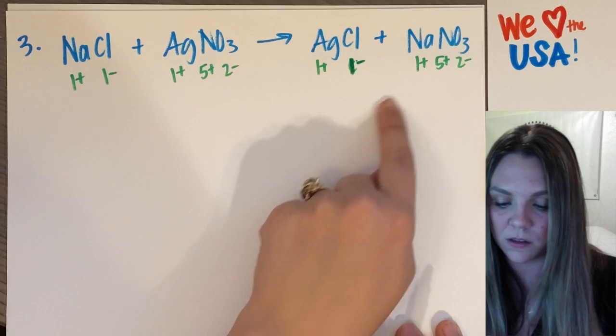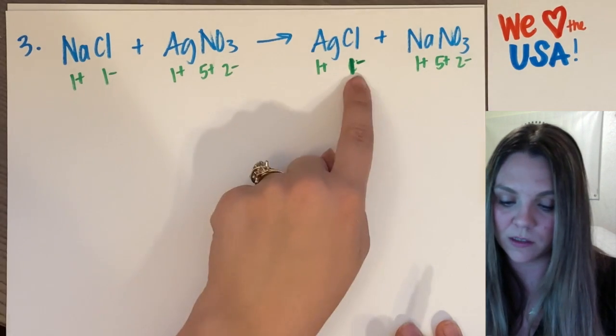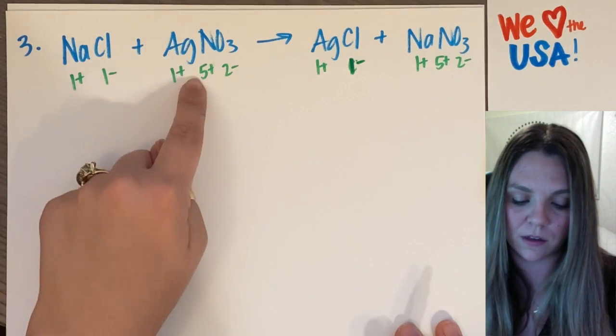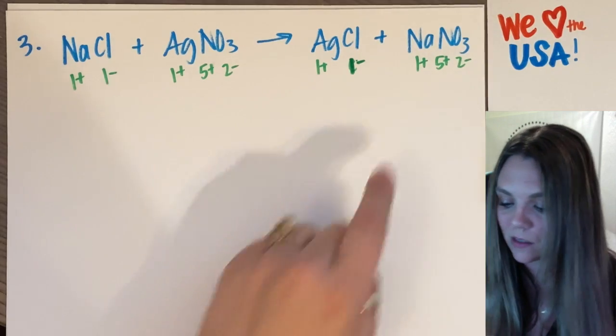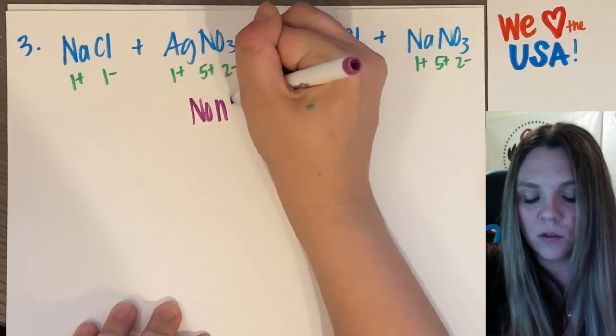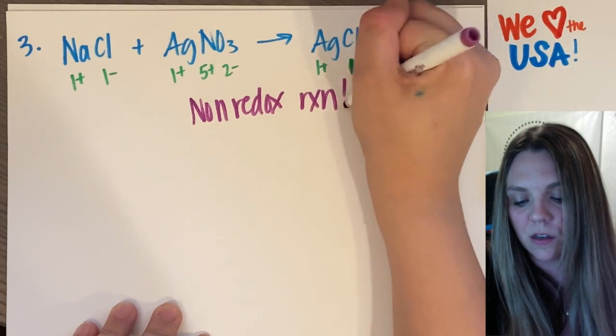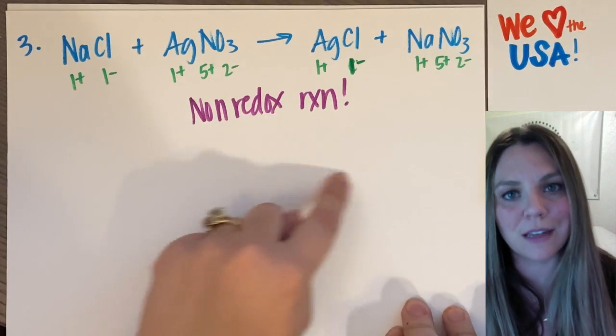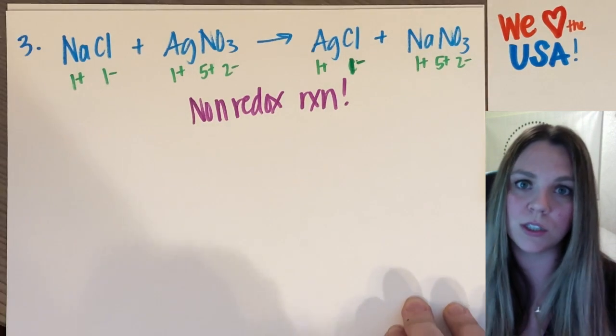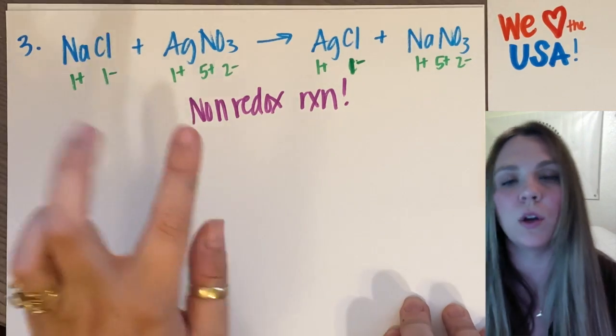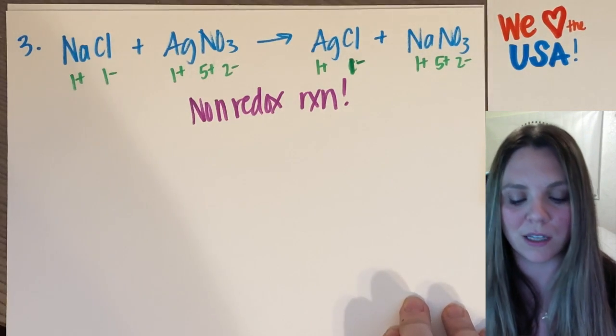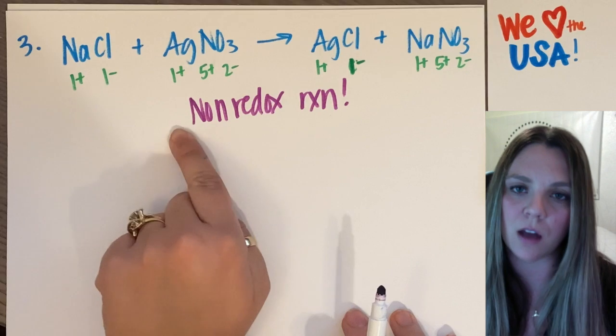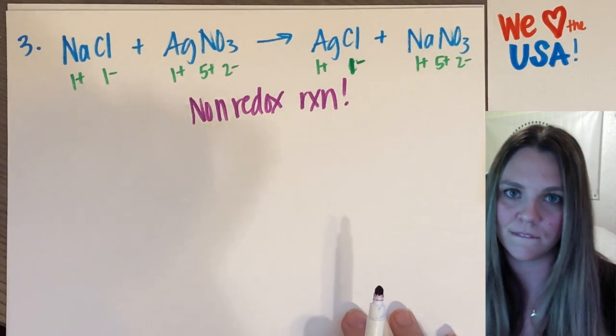So if I'm looking, sodium goes from a one plus to a one plus. Chlorine, one minus to one minus. Silver, one plus to one plus. Nitrogen, five plus to five plus. And oxygen, two minus to two minus. Non-redox reaction. There was no change in your oxidation numbers. This is not a redox reaction. That is a trick question that I guarantee will be asked you somewhere. The correct answer would be none of the above, because it's a non-redox reaction.